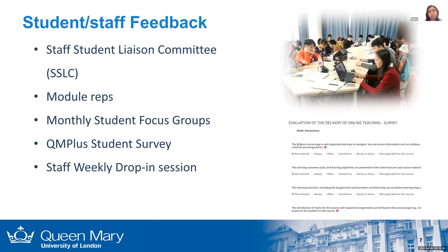For student feedback mechanisms, we've always had the standard mechanisms like the staff-student liaison committee, which meets twice a semester. We also have what we call module reps — a couple appointed per module by the module organiser. Their role is not to wait for the staff-student liaison committee, but to talk to the lecturer even every day or at least every week, giving immediate feedback — the font's too small, too fast, whatever — so we can rectify things quickly. These two we've had for a number of years.